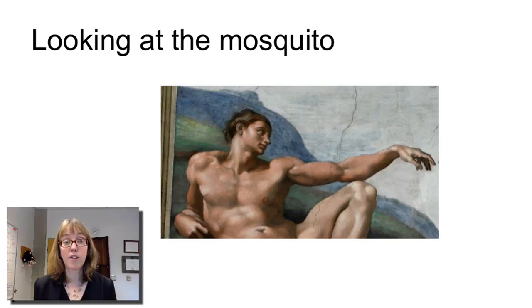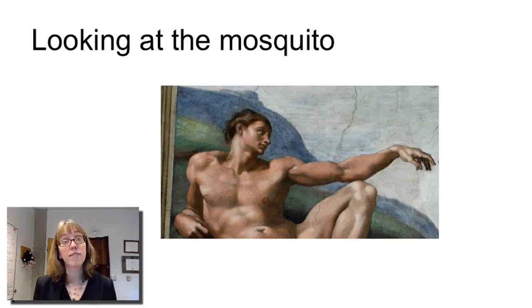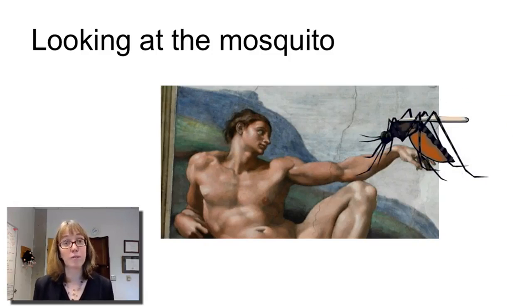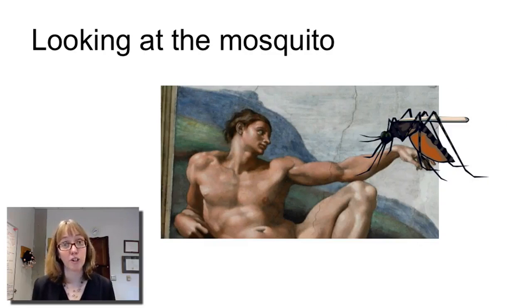When you feel something on your body, a natural response is to try to orient your eyes to look at it — to see what it is that has just touched you. For example, if you feel the bite of a mosquito, you want to turn your eyes to see whether it was a mosquito or possibly a bee, and second, what you need to do to get away from this creature.